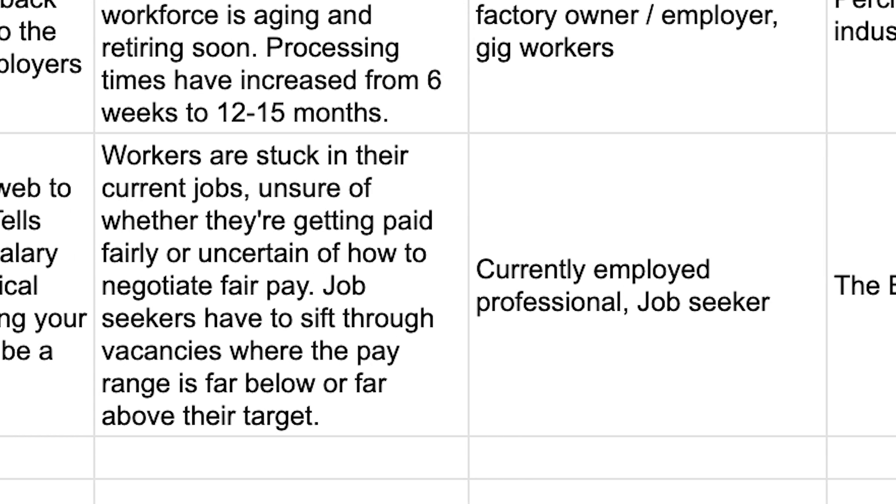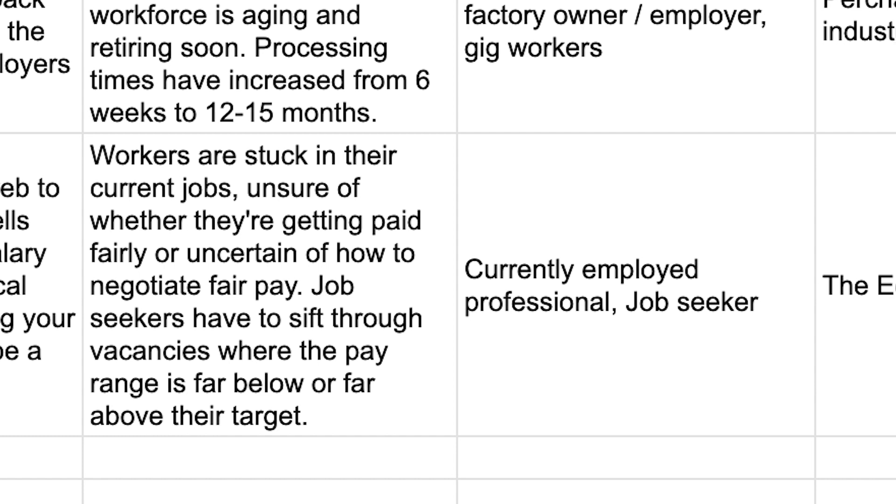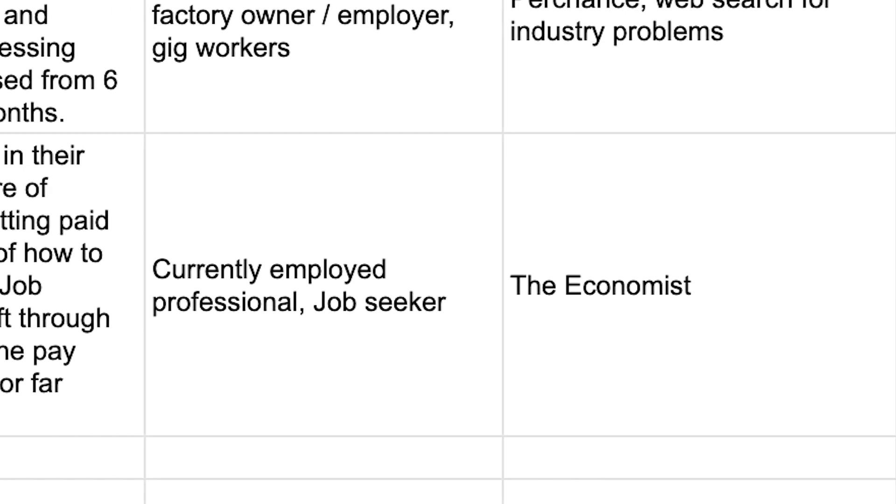And then for the problem slash opportunity, we'll say workers are stuck in their current jobs, unsure of whether they're getting paid fairly or certain of how to negotiate a fair pay. Job seekers have to sift through vacancies where the pay range is far below or far above the target. And for the user persona will say it's the currently employed professional or the job seeker. And the source is the economist.